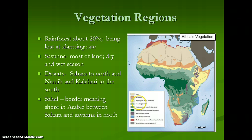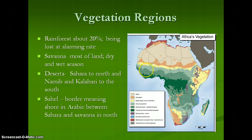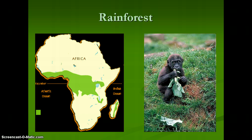About 20% of Africa is rainforest. The savanna is this lighter green area, and that's what we think about when we think about most places in Africa where wild animals are. Deserts are to the north and to the south, and the Sahel is the border region between the desert and the grasslands. The rainforest covers about 20% of Africa, but it is shrinking at a relatively rapid pace, and that is a problem.